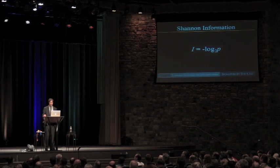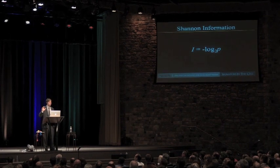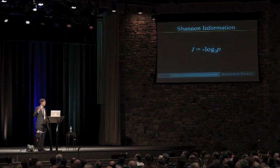There are two different types of information in the information sciences. There's the mathematical measure of information as provided by the famous information theorist Claude Shannon. DNA has that kind of information — a measurable amount. But the mathematical theory of information doesn't tell you whether the information you're dealing with is meaningful or functional, or simply an improbable arrangement of characters — just an information-carrying channel which may or may not have any functional information in it.